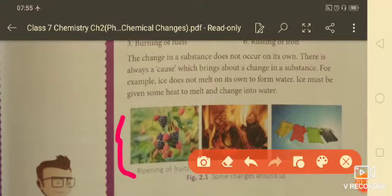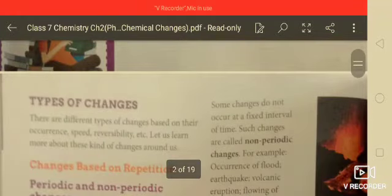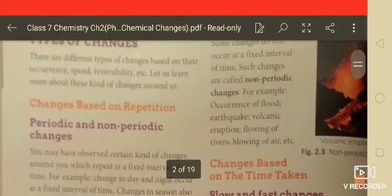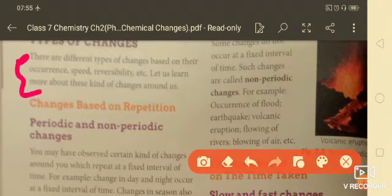Now, next one is types of changes. You know there are different types of changes based on their occurrence, speed, reversibility, etc. So let us learn more about the kinds of changes around us.